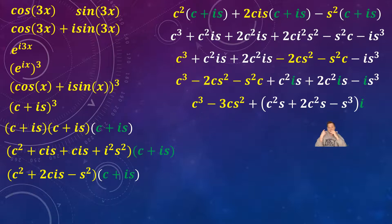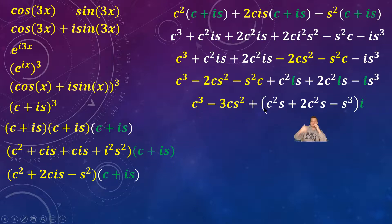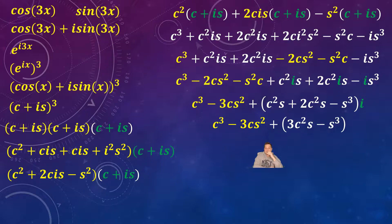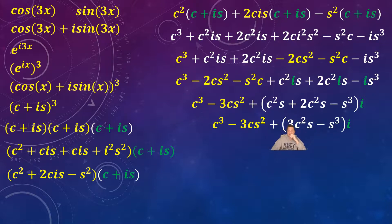At this point we have a complex number where the yellow piece represents the real part and the white piece represents the imaginary part. Combining the remaining like terms: c squared·s plus 2c squared·s gives 3c squared·s, and s cubed stays by itself. So we get: c cubed minus 3c·s squared plus i times (3c squared·s minus s cubed).